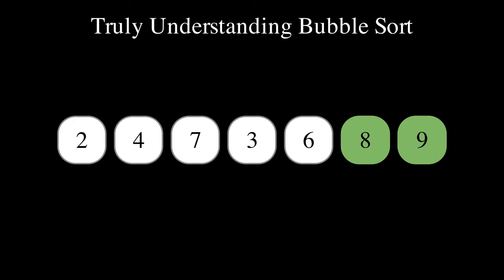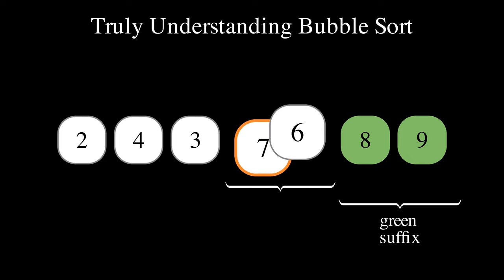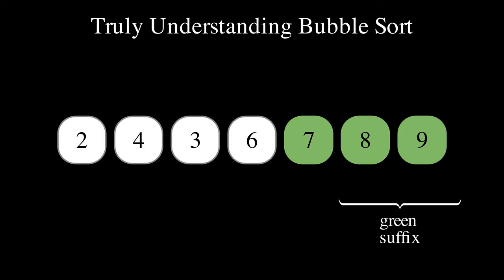We are beginning to understand what is happening. With each pass, the suffix of elements that are in their final position, which we will call the green suffix, increases in size. The third pass makes 7, the third largest element, go to its final position. Incidentally, 6 also happens to hit its final position in this pass, so the green suffix actually increases in size by two elements.